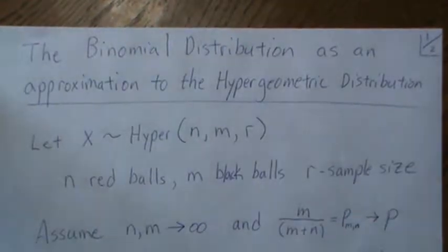Essentially what that means is asymptotically the hypergeometric distribution goes to the binomial distribution, assuming that it goes in a controlled way.